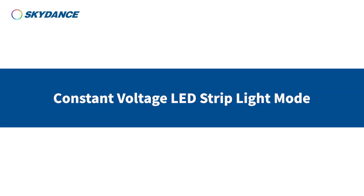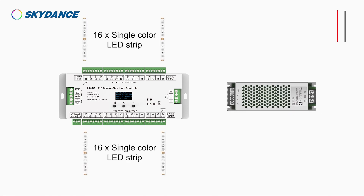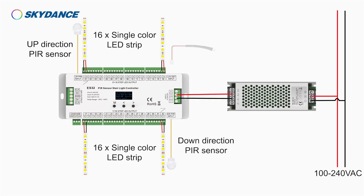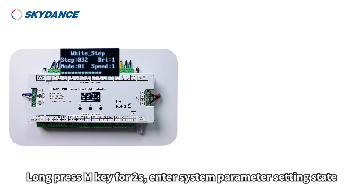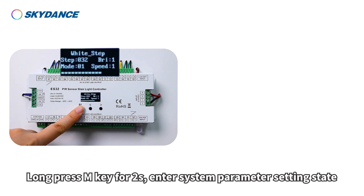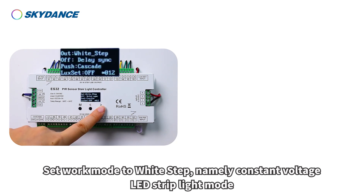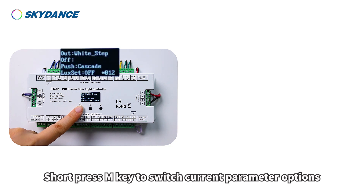Constant Voltage LED Strip Light Mode. Long press the M key for two seconds to enter system parameter setting state. Set work mode to white step, namely Constant Voltage LED Strip Light Mode. Short press M key to switch current parameter options.